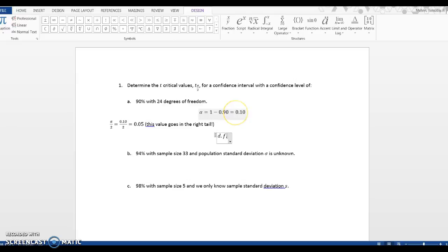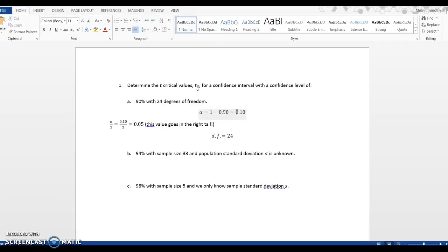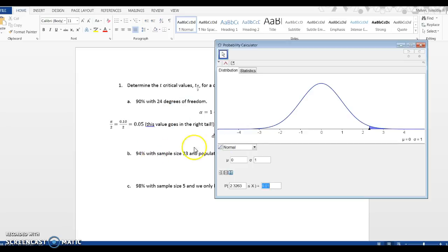The other thing is degrees of freedom is 24. Let's look at GeoGebra and see what happens. First thing I want to look at is we're not in the normal distribution, we're in student T distribution.